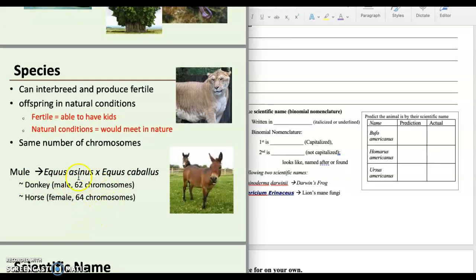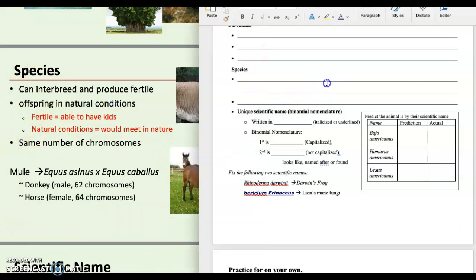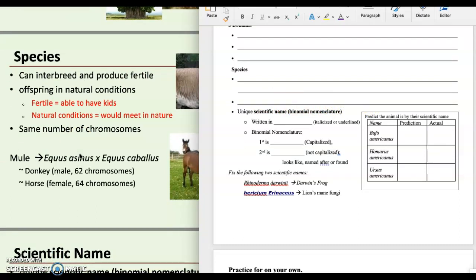The main reason for that is the number of chromosomes within each species. A donkey has 62 and a horse has 64. So the way those chromosomes align during fertilization just doesn't allow for a mule to reproduce. So, anyway, all that to say, these two bullet points, this one here and this one here, you need the same number of chromosomes. So a species can interbreed, produce fertile offspring in natural conditions, and they must have the same number of chromosomes there. And that is what makes a species under our classification.